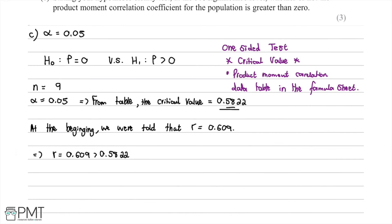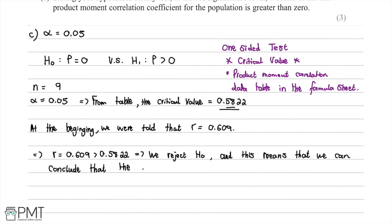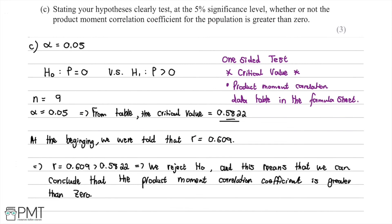Since r = 0.609 is greater than the critical value of 0.5822, we reject H₀. This means we can conclude that the product moment correlation coefficient is greater than zero. We received three marks in total: one for stating the hypotheses clearly, one for correctly finding the critical value from the table, and one for rejecting H₀ and stating the correct conclusion.